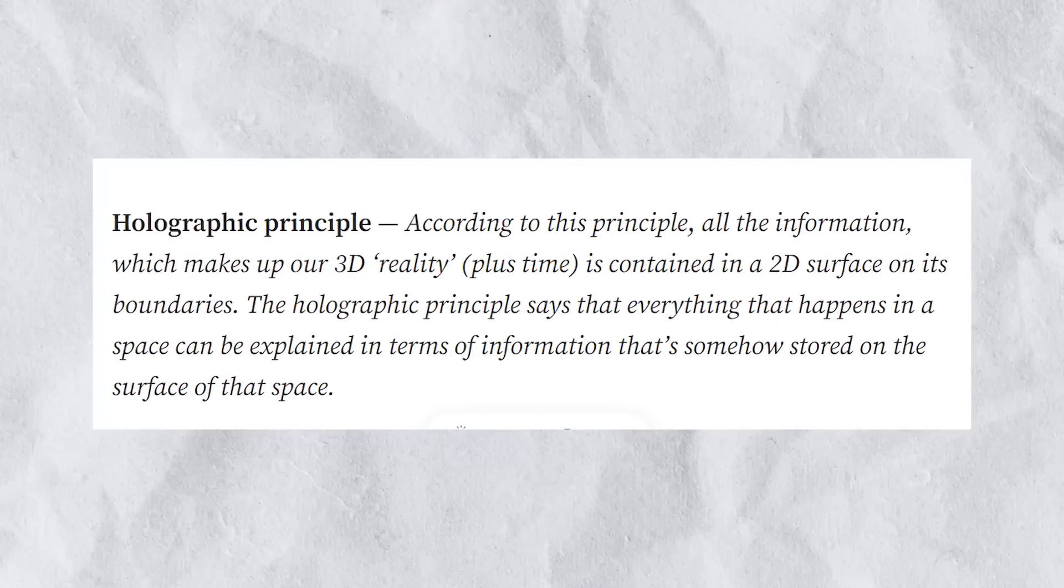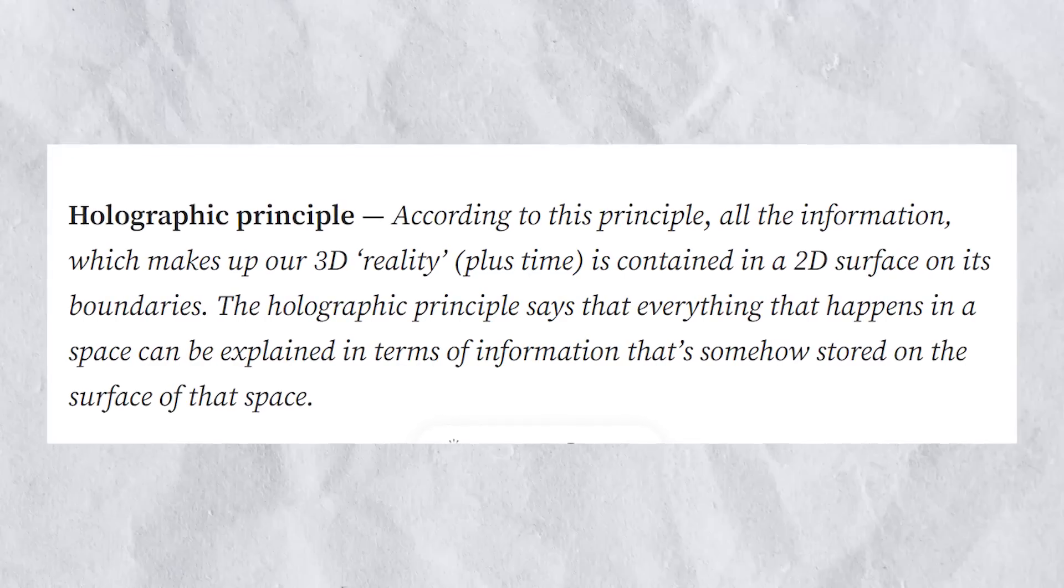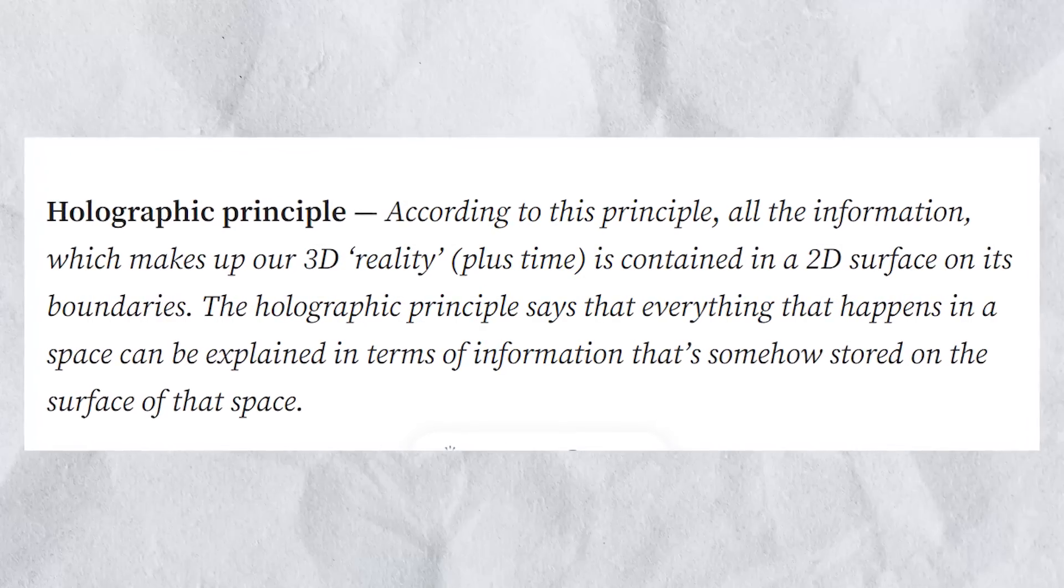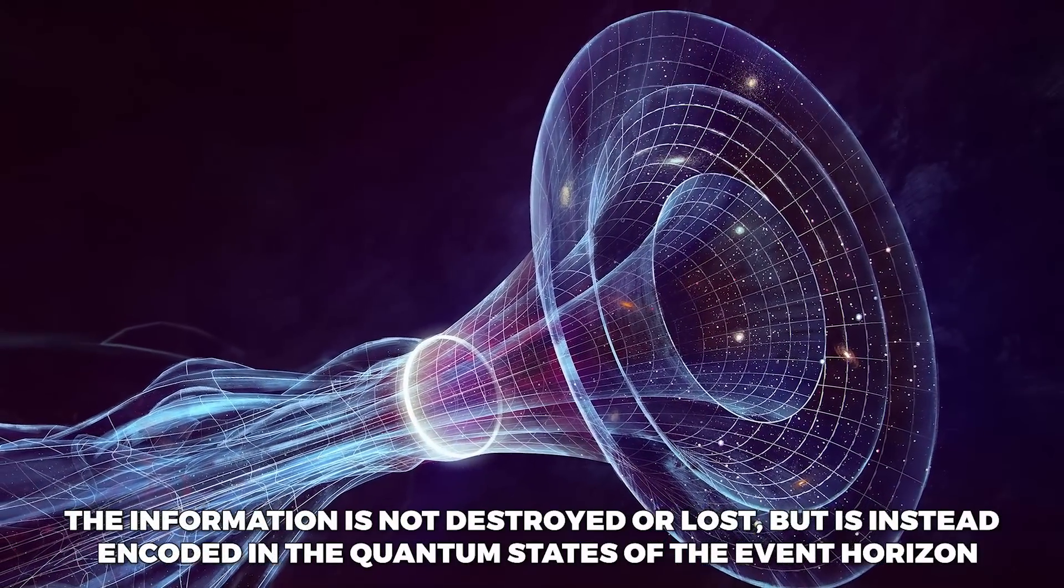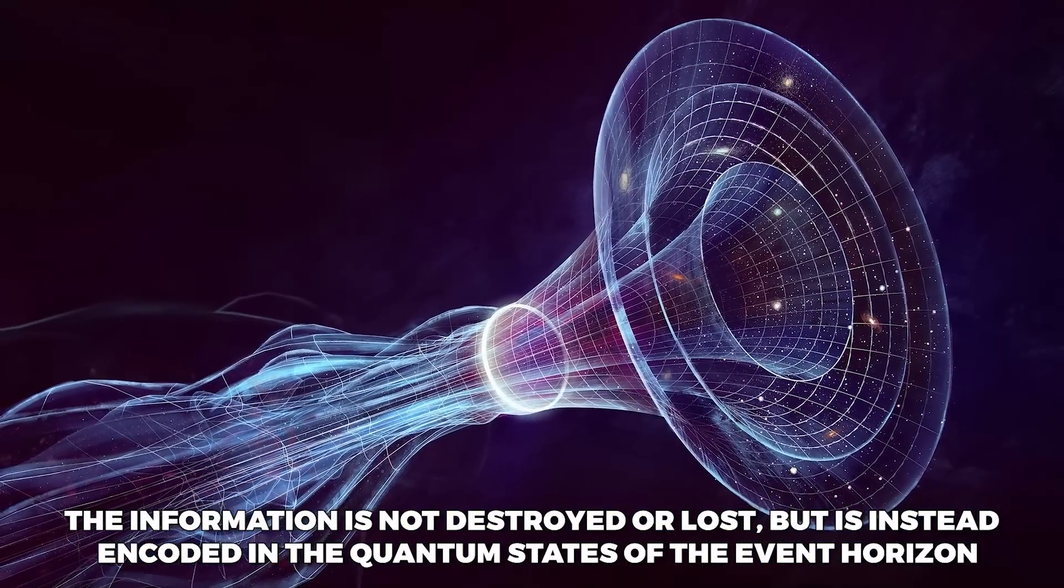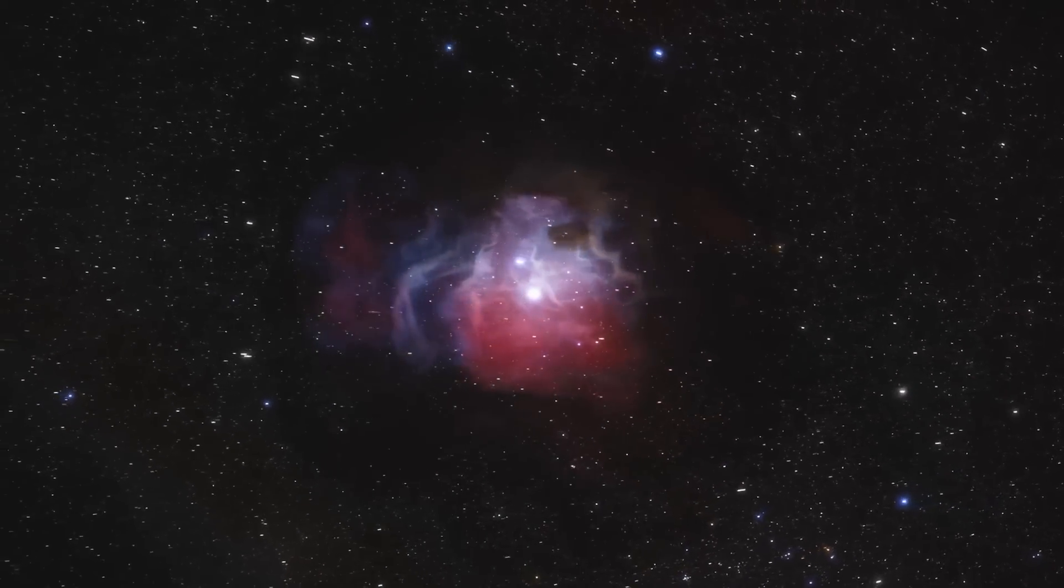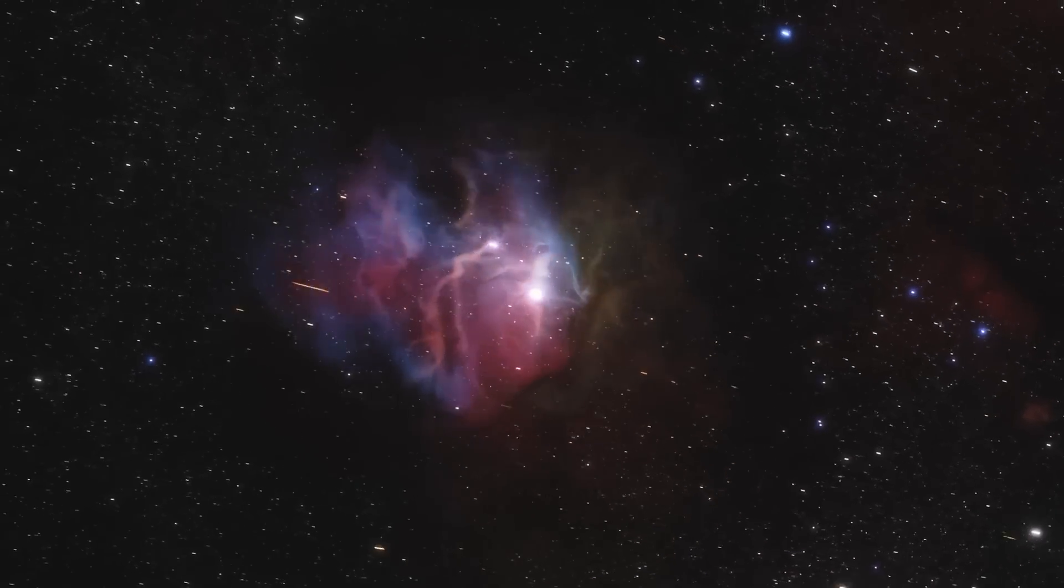According to this theory, the event horizon acts as a two-dimensional surface that stores all the information about the matter that fell into the black hole. The information is not destroyed or lost, but is instead encoded in the quantum states of the event horizon. This theory has been used to develop a framework for understanding the behavior of black holes and the information paradox.